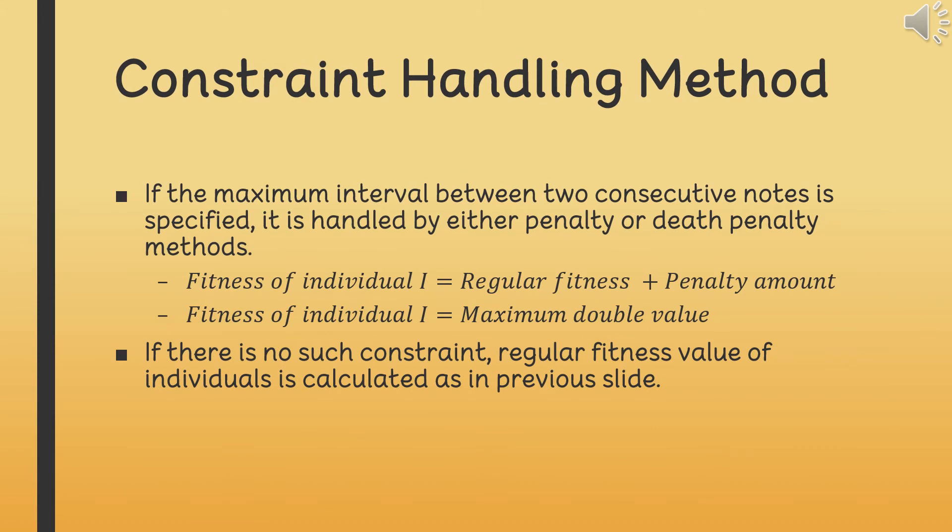If a limit for the interval between two consecutive notes is specified, this constraint is handled by either penalty or death penalty methods. For an infeasible individual, in penalty method, we add a penalty value to the regular fitness. In death penalty method, we assign the maximum double value as the fitness. If there is no constraint, regular fitness value is calculated as in the previous slide.